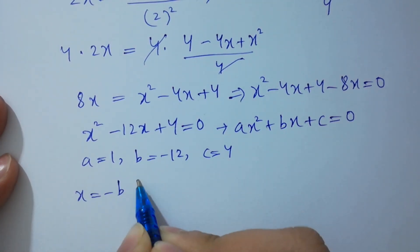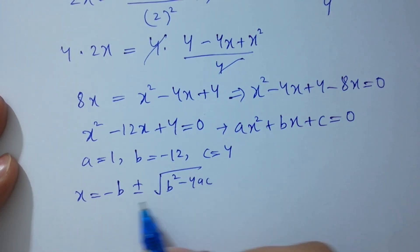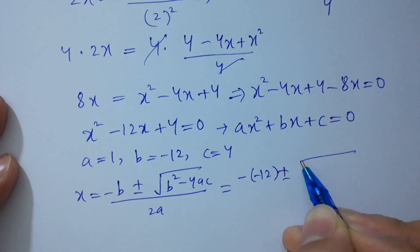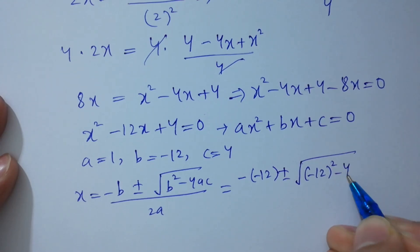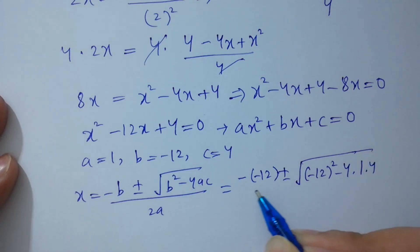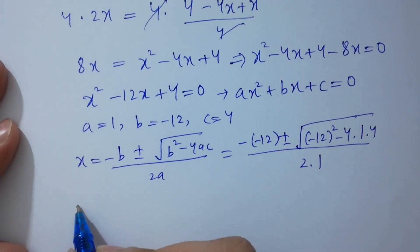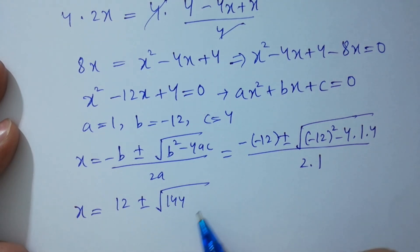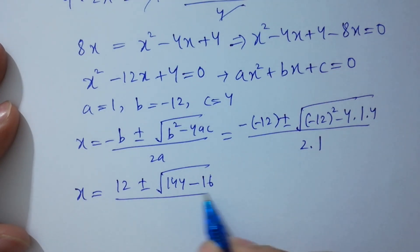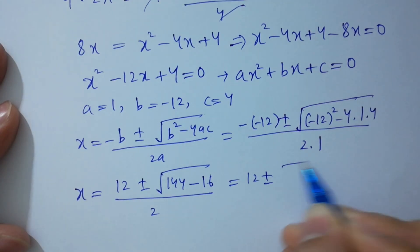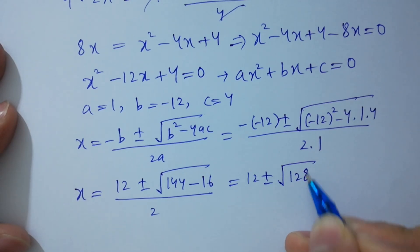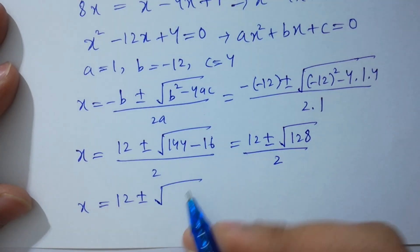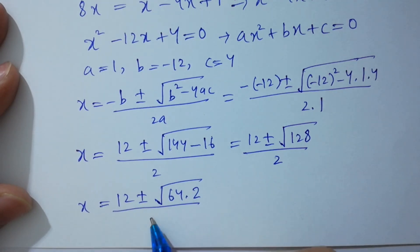x equals minus b plus or minus square root of b squared minus 4ac, over 2a. Substituting values: b is minus 12, so x equals 12 plus or minus square root of minus 12 squared minus 4 times 1 times 4, over 2. That gives x equals 12 plus or minus square root of 144 minus 16, over 2, which is square root of 128.